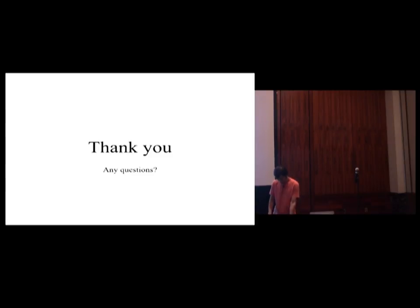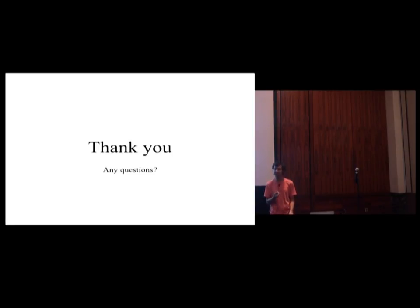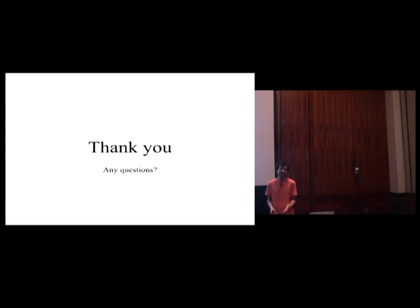The way partial colouring was originally given, you have no control as to which of the half points will get coloured. So you can very simply construct examples where you will get a log n factor. The algorithms which made partial colouring constructive — we don't really know if they actually fail or not. But people believe they fail because there is no reason that you will get any control over which of the half points get coloured.